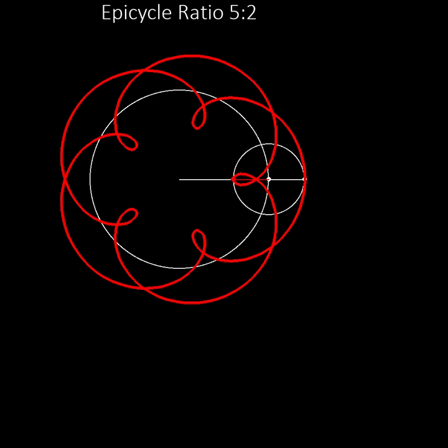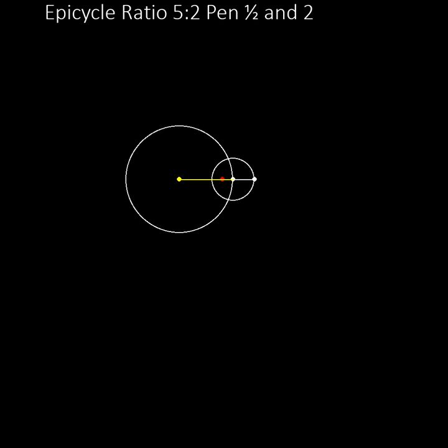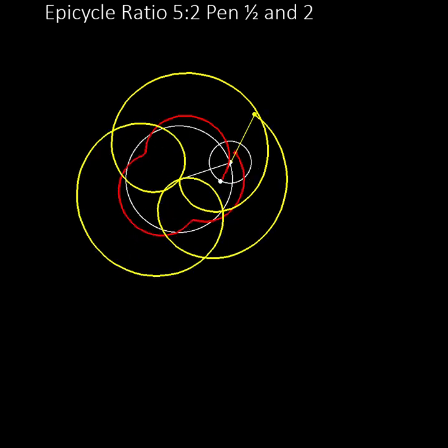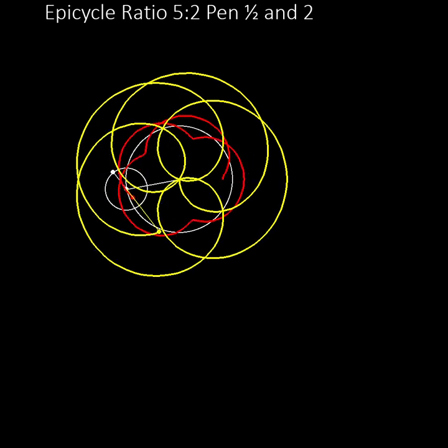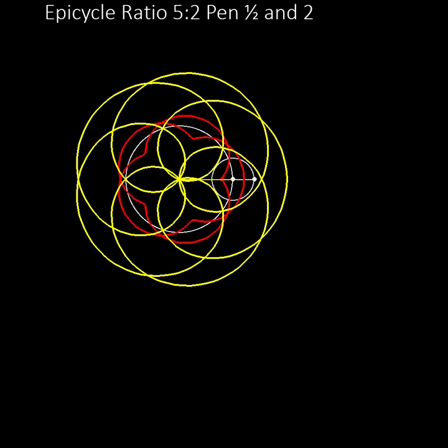We do not have to use pen position 1. Here are epicycles with the same ratio 5 to 2, but with the pen at position 1.5 in red and at position 2 in yellow. Notice that in the red curve the loops have disappeared, but in the yellow curve the loops have become larger and now meet at the centre of the central circle.